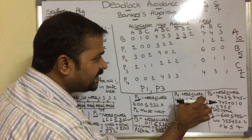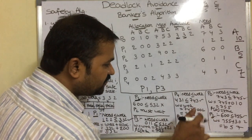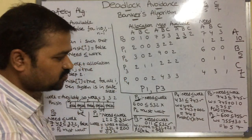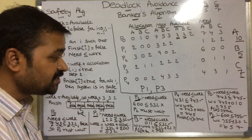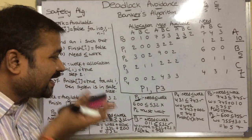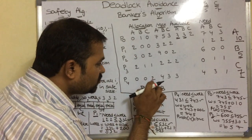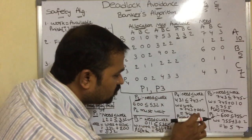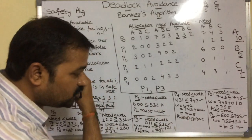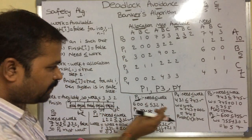We can complete P4 execution. Once P4 finishes, add its allocated resources (0, 0, 2) to Work: 7, 4, 3 + 0, 0, 2 = 7, 4, 5. Set Finish[4] = true. Now search from the start. P0 and P2 are not yet executed. Check P0 again — Need is 7, 4, 3 vs Work 7, 4, 5. Is 7 ≤ 7? True. Is 4 ≤ 4? True. Is 3 ≤ 5? True. Condition is true — we can complete P0 execution.